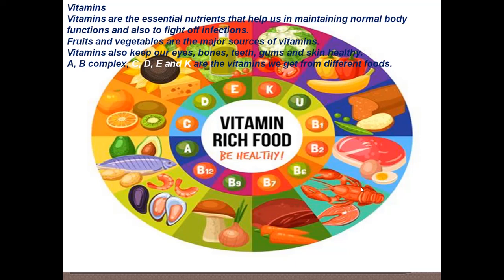Vitamins are essential nutrients that help us in maintaining normal body functions and also help to fight off infections. Fruits and vegetables are the major sources of vitamins. Vitamins also keep our eyes, bones, teeth, gum and skin healthy. Vitamin A, B complex, vitamin C, D, E and K are the different groups of vitamins that we get from different food items that we eat.